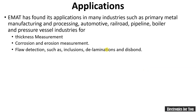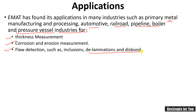Now let us talk about applications. EMAT is used in metal manufacturing, automotive, railroads, and pipelines — all related to metallic thickness measurement. It can also be used for corrosion and erosion measurement, as well as flaw detection such as inclusion, delamination, and disbonding. These are the main applications of EMAT.